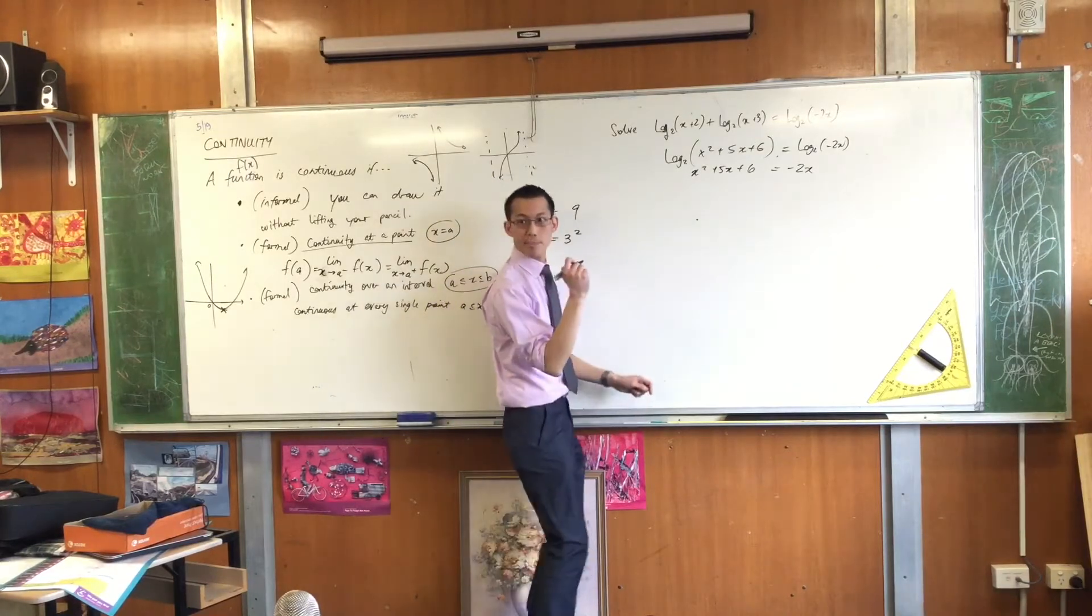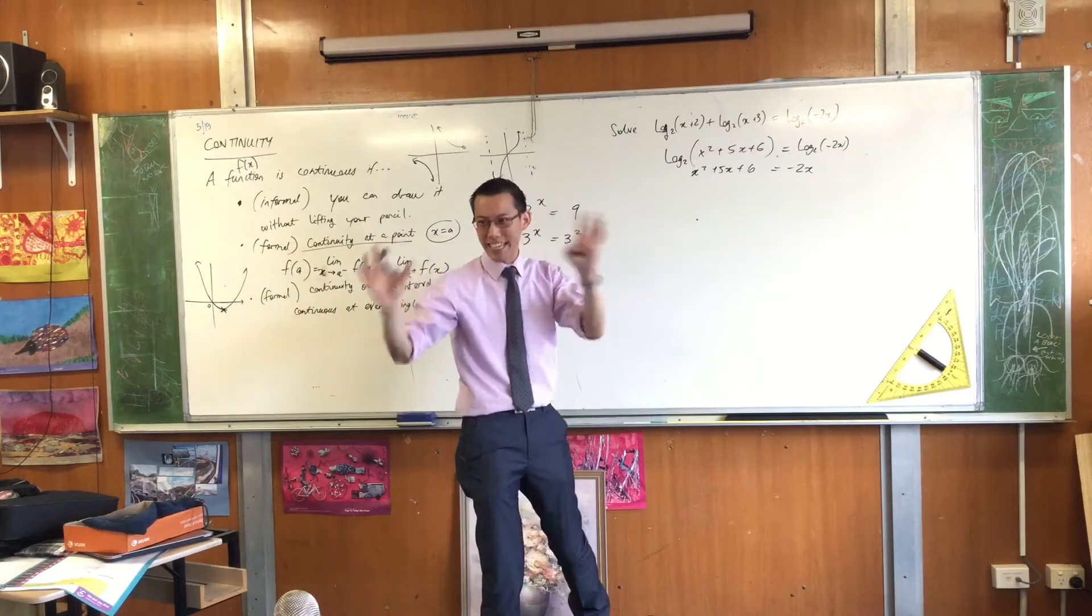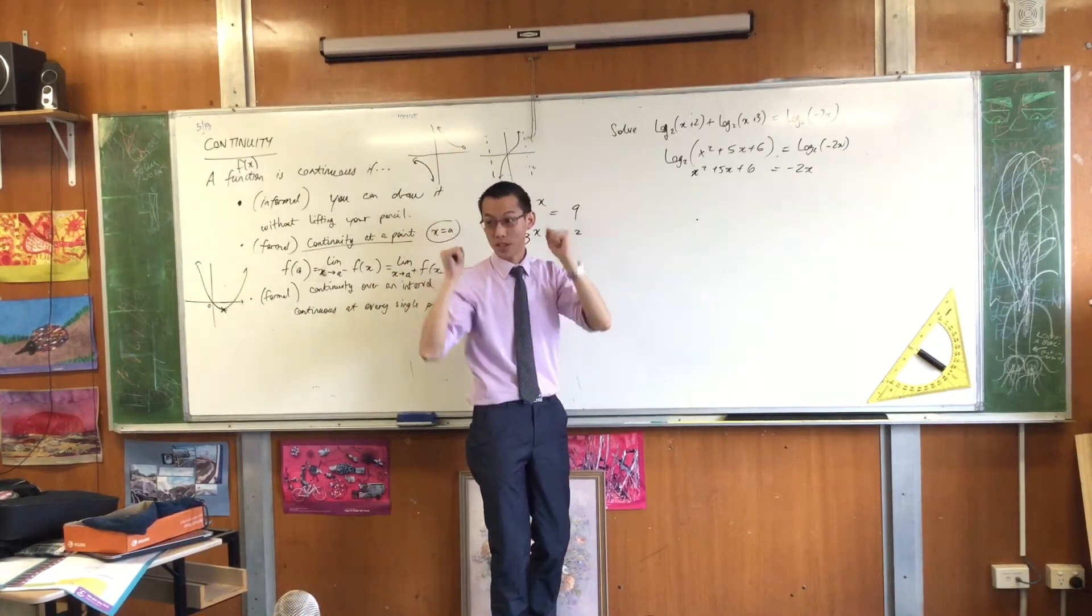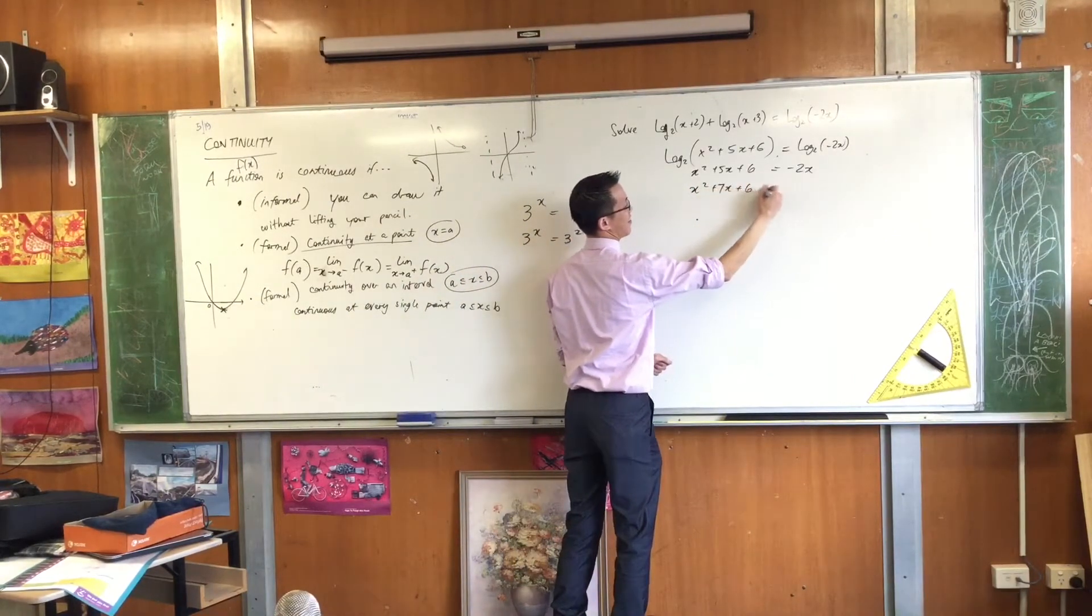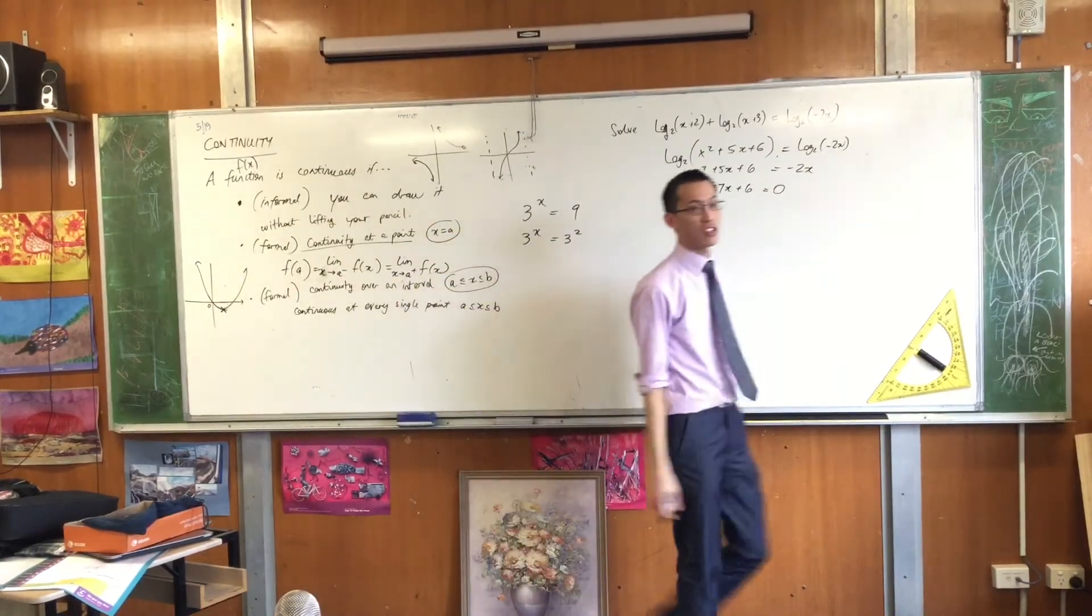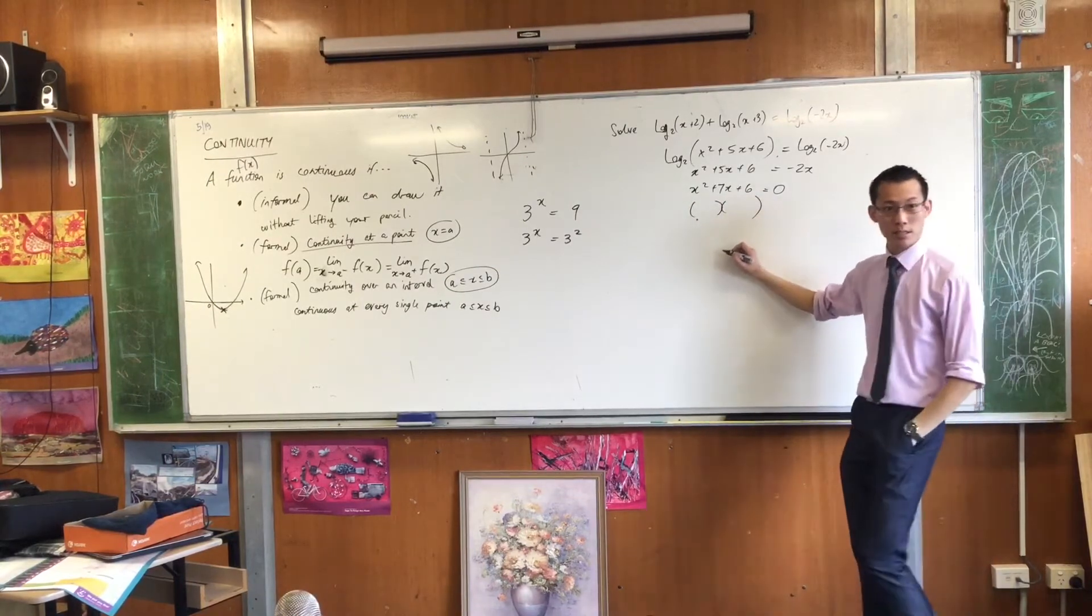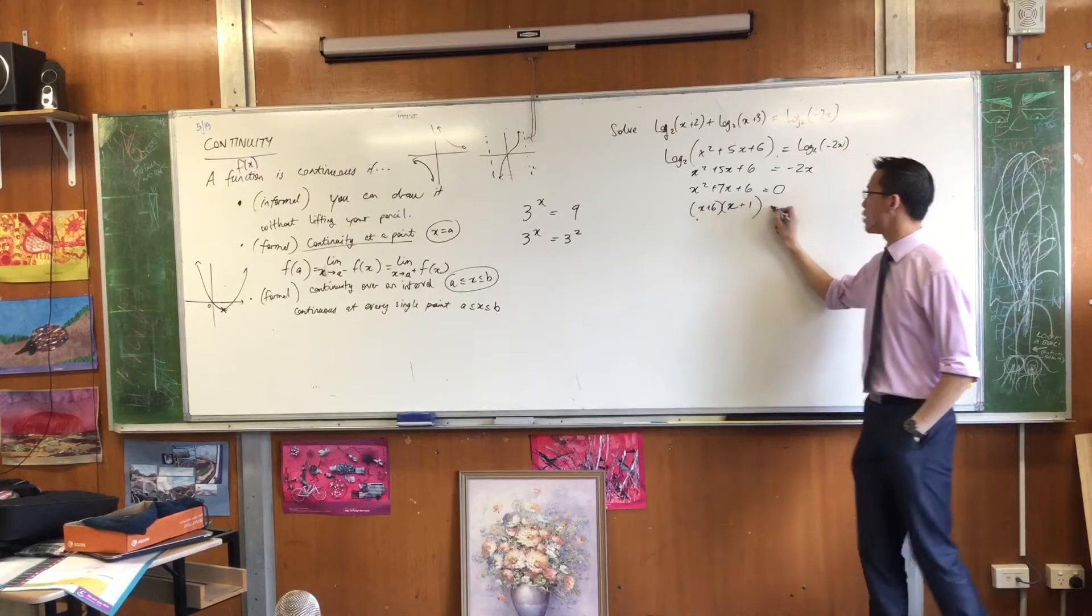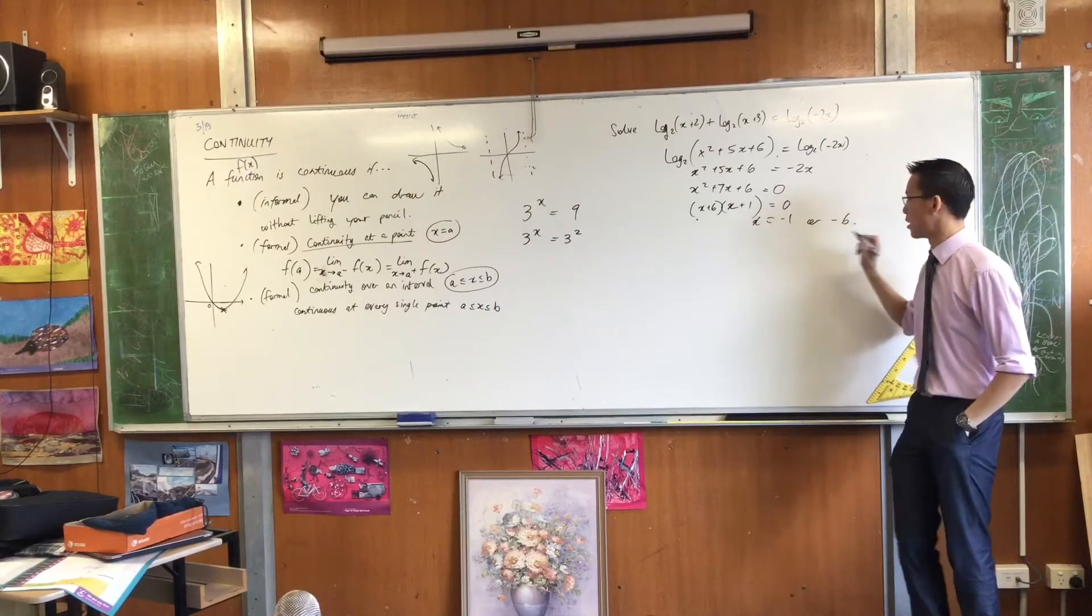Now what? Bring it plus 2X. Ah, you're going to add 2X to both sides. There's no bringing, there's no moving things around. It's an equation, so you're doing the same thing to both sides. I'm adding 2X to both sides. Like so? And now you've completely turned this question into a quadratic question, haven't you? So, you can factorize this of course. And then that gives you a pair of solutions. Namely...